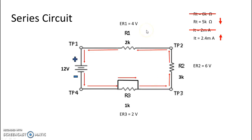So if we look at it mathematically, we see that we take our original ohmic value of 2k ohms and multiply it by our new current of 2.4 milliamps. And we get a new voltage drop of 4.8 volts, which is higher than our original voltage drop of 4 volts.